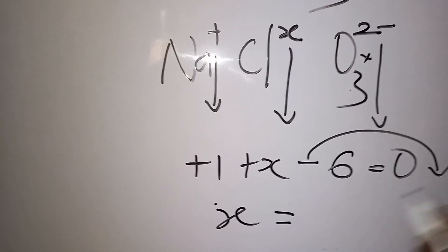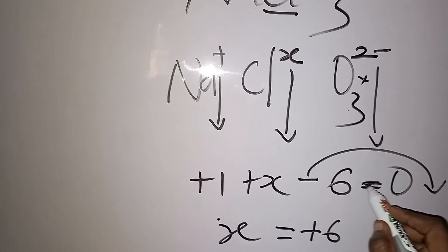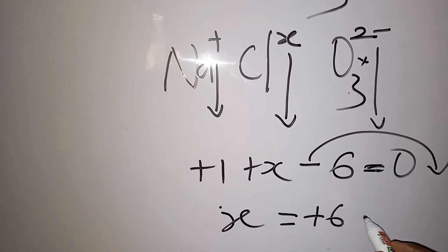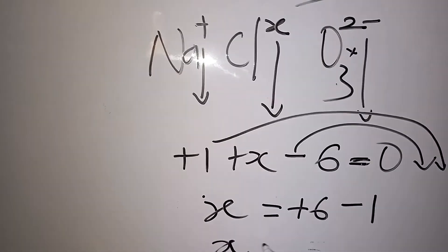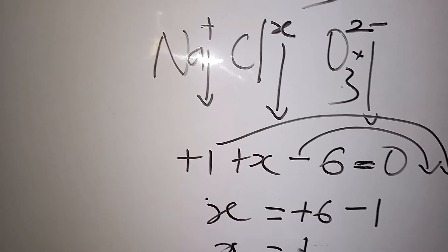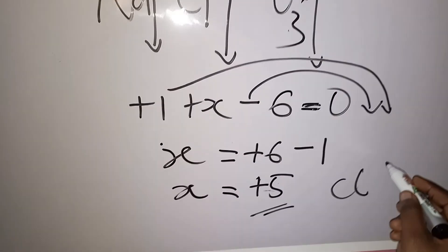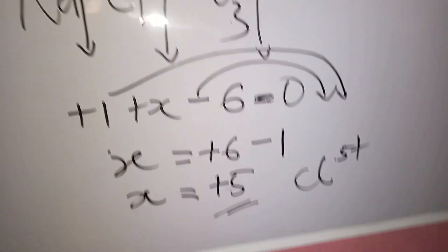Transferring terms across the equals sign, the sign changes: −6 becomes +6, and +1 becomes −1. So x = +6 − 1 = +5. The oxidation state of chlorine in sodium chlorate is +5. Our answer is c) +5.